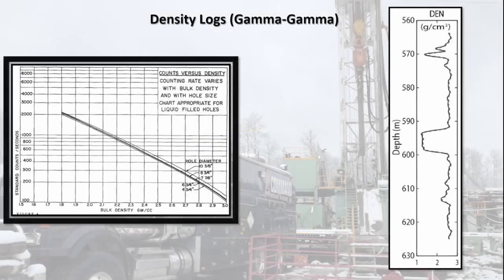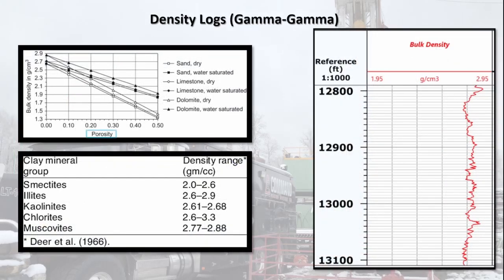Density logs monitor the gamma rays able to pass through the formation in counts per second. This is a method of measuring electron density which correlates strongly to bulk density of the formation. Modern equipment is able to convert this measurement directly to grams per cubic centimeter. In essence, high gamma ray counts indicate a low density formation while a low count equates to a higher density. Porosity can be inferred inversely from the bulk density when the matrix is well known.